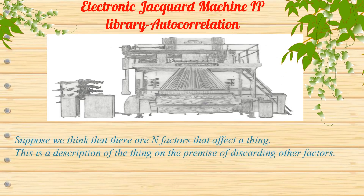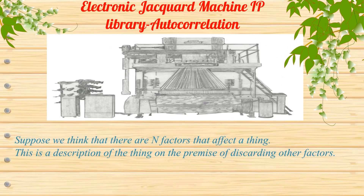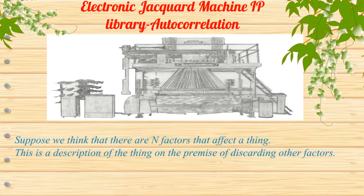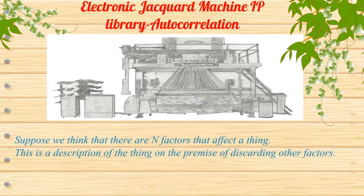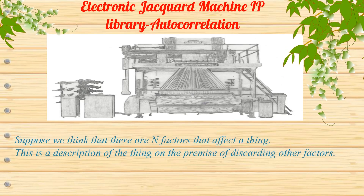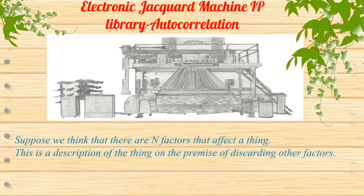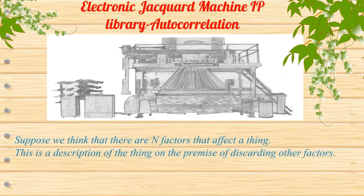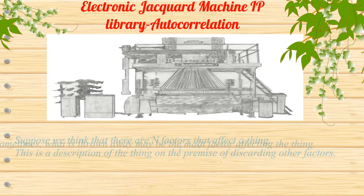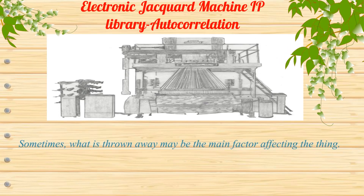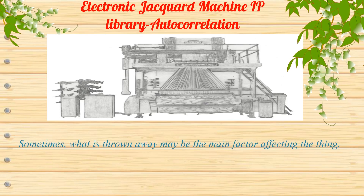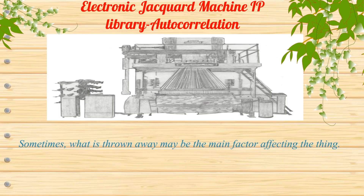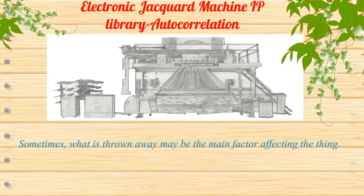Suppose we think that there are N factors that affect a thing. This is a description of the thing on the premise of discarding other factors. Sometimes, what is thrown away may be the main factor affecting the thing.